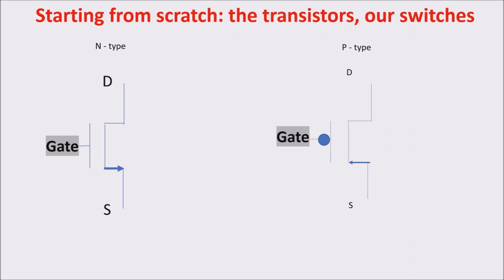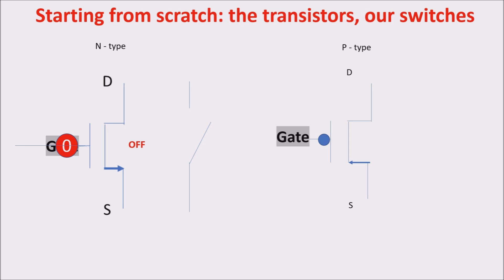I prefer to start with the basics, so from our little and very fast switches: the transistors. We use two types of transistors, N-type and P-type. For our purposes, we just think of the transistor as a switch. The N-type transistor is ON if I apply a 1 or higher voltage to the gate, and it's OFF if I apply 0 or lower voltage. The P-type works the opposite: it is OFF if I apply 1, and it's ON if I apply 0.